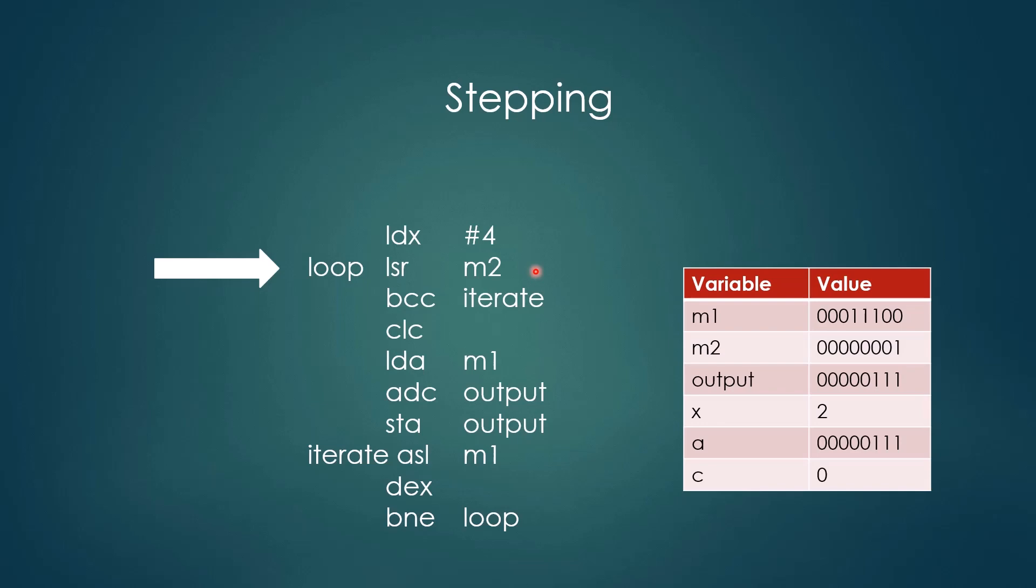And here we're shifting another bit of the multiplier into the carry flag. This time it is 1. So we will not take this branch. And now we'll clear carry in preparation for our add instruction here. And so we'll load our multiplicand, add it to the output, and update output. So you can see the output has changed now. And now we'll iterate our loop again, but first shifting our multiplicand left. Our X register is now down to 1, so this will be our last iteration of our loop.